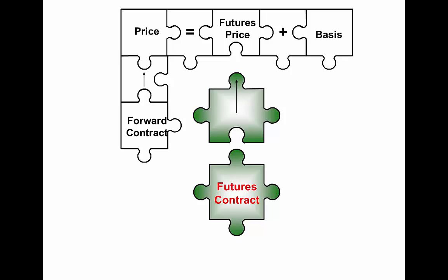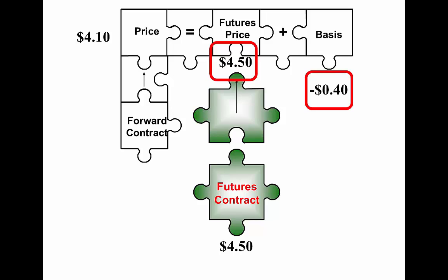In our puzzle, the futures contract has a direct impact on the futures price and no impact on the basis. So if the basis is minus forty cents and the futures contract is four dollars and fifty cents, our futures price is $4.50. If we hedge — in other words, we sell a futures contract when delivering commodities such as corn, oats, or wheat — we lock in that $4.50 price and have an expected hedge price of $4.10. But that $4.10 is an expected price, not a locked-in price like a forward contract, because the futures contract locks in the futures price but does not lock in the basis. You still have basis risk, and how that basis changes will impact your net price.